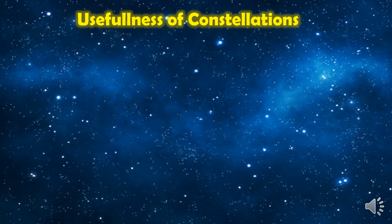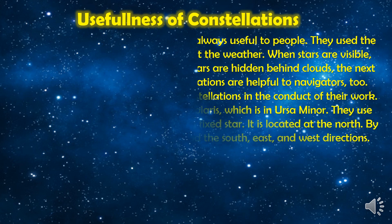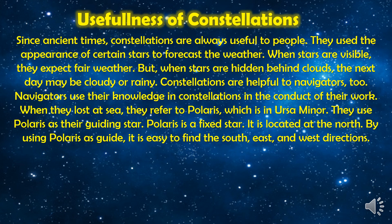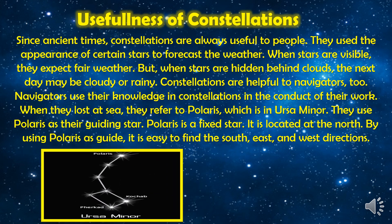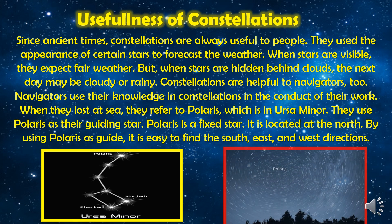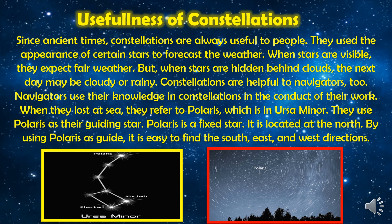Let us discuss the usefulness of constellations. Since ancient times, constellations have always been useful to people. They use the appearance of certain stars to forecast the weather. When stars are visible, they expect fair weather, but when stars are hidden behind clouds, the next day may be cloudy or rainy. Constellations are also helpful to navigators. When lost at sea, they refer to Polaris, which is in Ursa Minor, and use it as their guiding star. Polaris is a fixed star located in the north. By using Polaris as a guide, it is easy to find the south, east, and west directions.